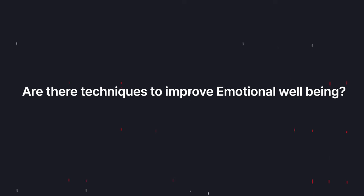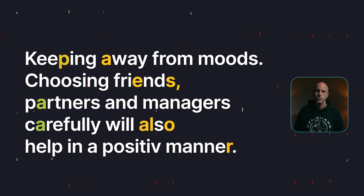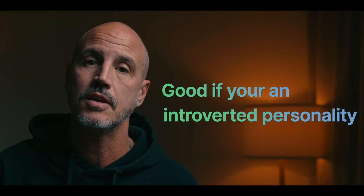Are there techniques to improve emotional well-being? Yes. Meditation or NSDR have the ability to slow down the link between the trigger and the refractory period so that you can break the link before it takes hold of you. Making sure your sleep is good and long enough will also help. Choosing friends, partners, and managers carefully will help in a positive manner. Having a cold shower or ice bath for one to two minutes will produce more dopamine for a longer period of time — good if you are an introverted personality and you want to be happier in life.